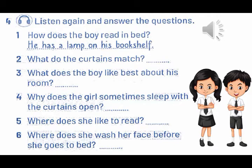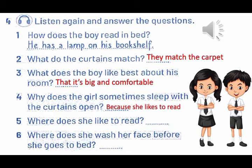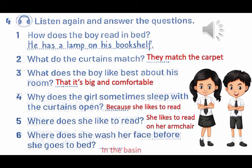We have to answer the questions. Number one is done for you: how does the boy read in bed? He has a lamp on his bookshelf. Number two: what do the curtains match? They match the carpet. Number three: what does the boy like best about his room? That it's big and comfortable. Number four: why does the girl sometimes sleep with the curtains open? Because she likes to read. Number five: where does she like to read? She likes to read on her armchair. Number six: where does she wash her face before she goes to bed? In the basin.